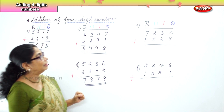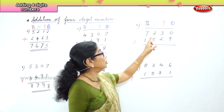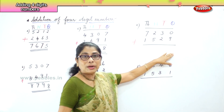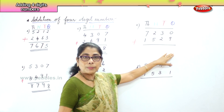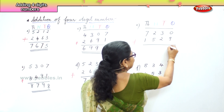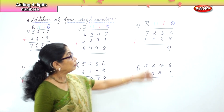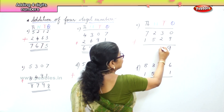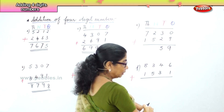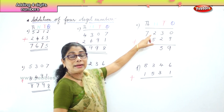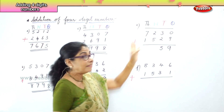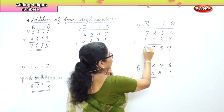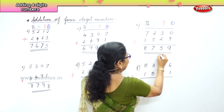In the next sum, you have seven thousand two hundred and thirty plus one thousand five hundred and twenty-nine. In the ones place, you have zero ones plus nine ones — that is nine ones. In the tens place, three tenths plus two is five tenths. Then in the hundreds place, two hundreds and five hundreds — five plus two is seven hundreds. And in the thousands place, seven and one is eight thousand, giving the answer eight thousand seven hundred and fifty-nine.